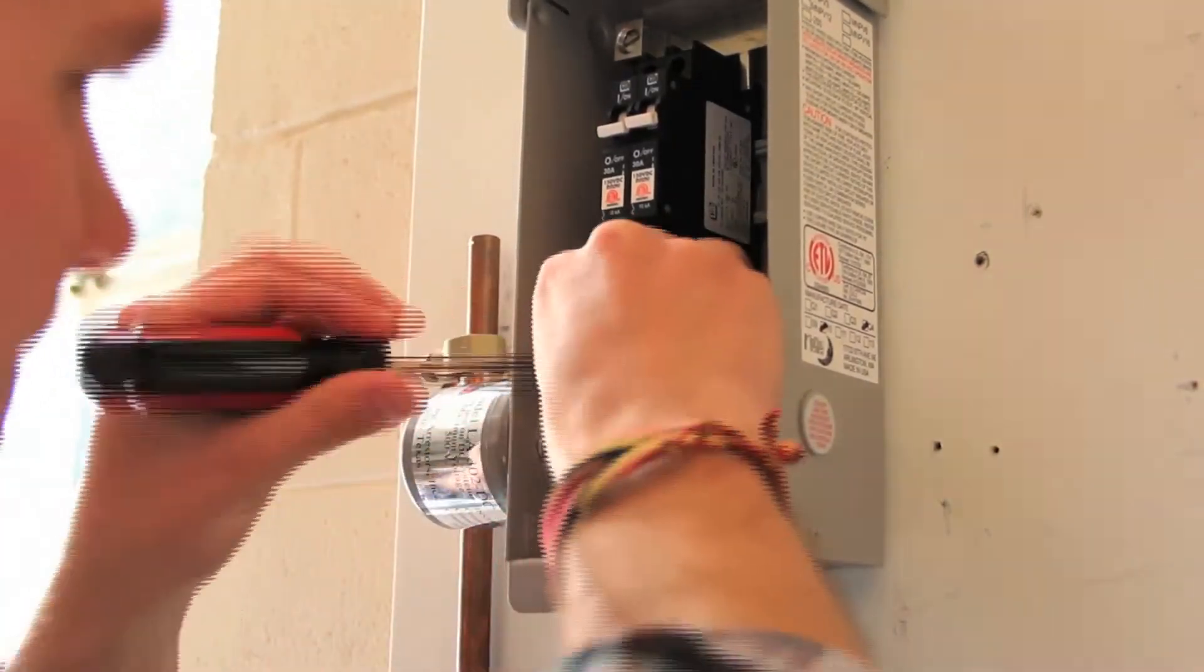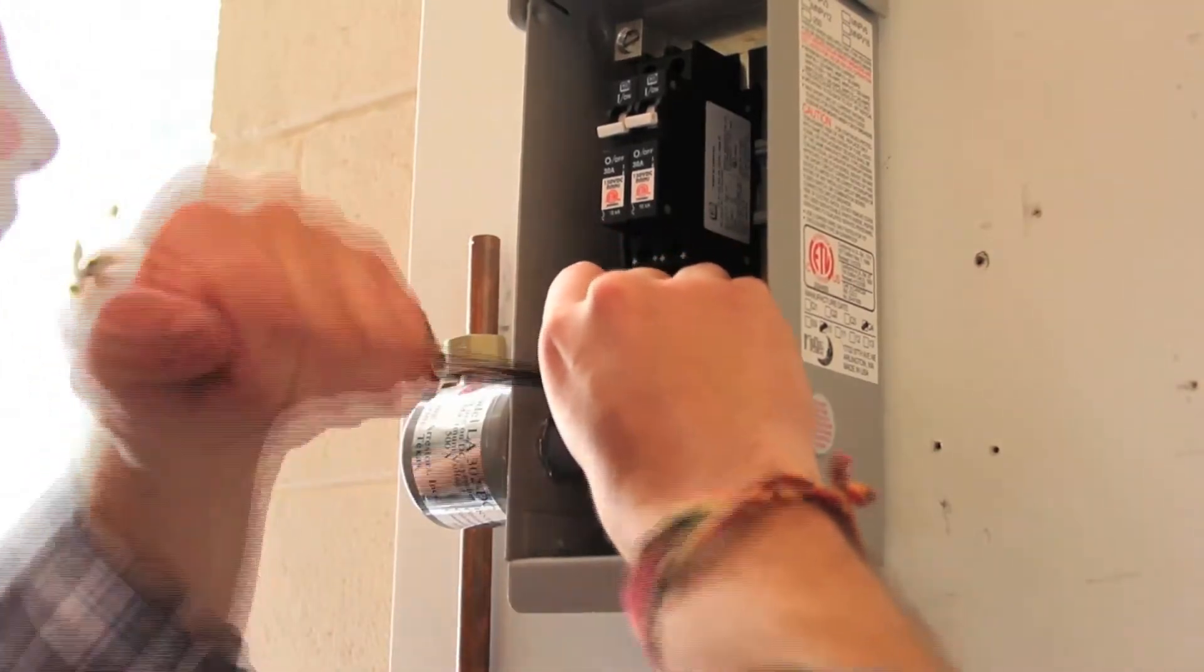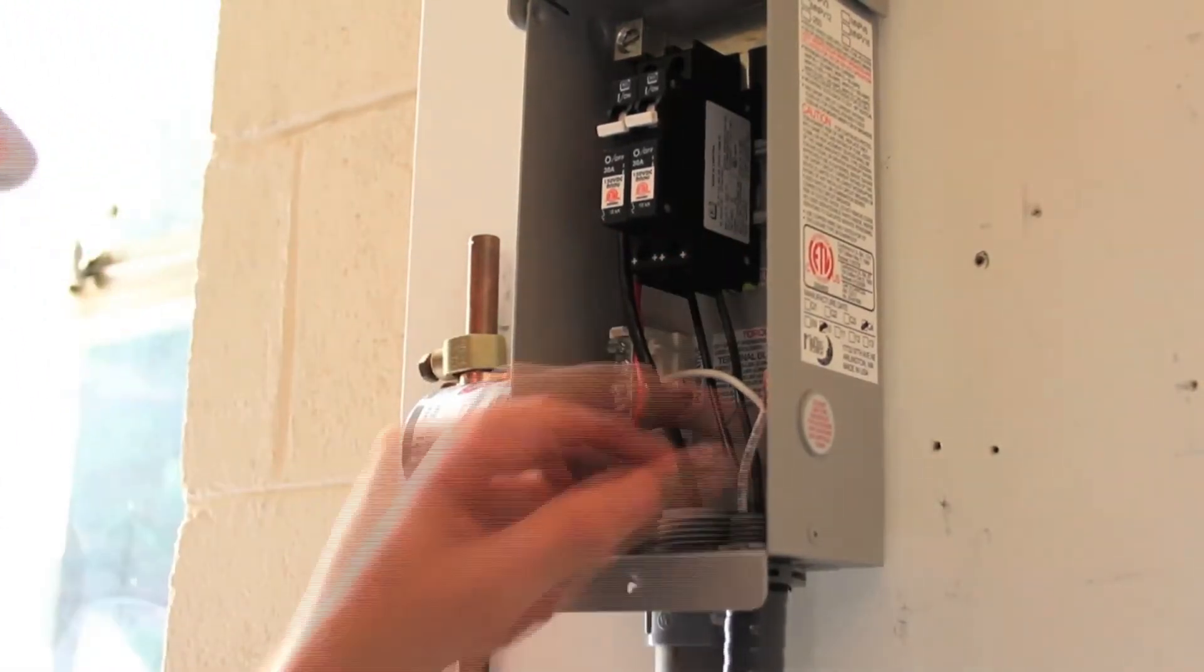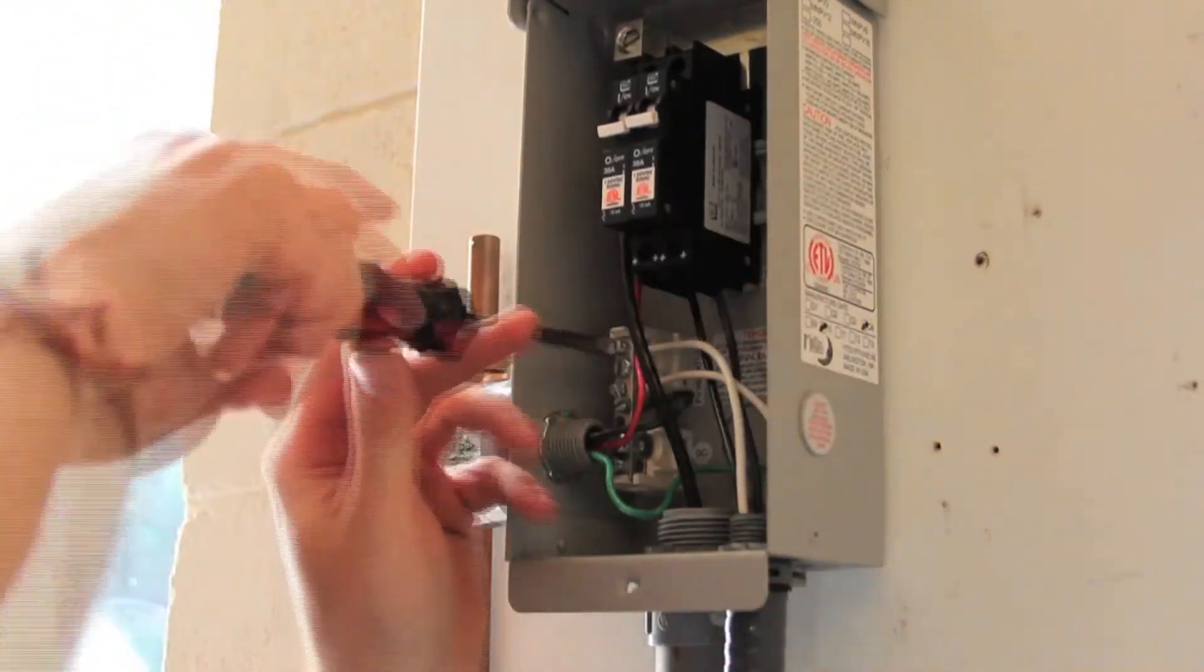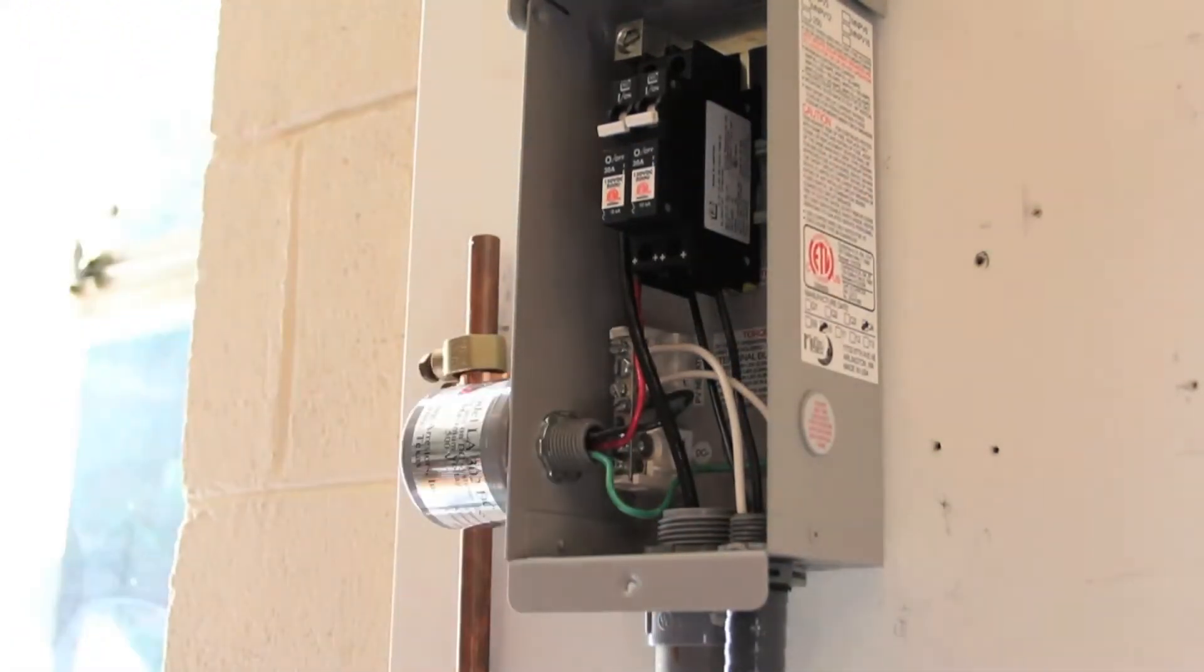We have our large positive wire, which will go back to your batteries or load center. The next step in this array will be putting the PV negative strings on the PV negative bus bar.